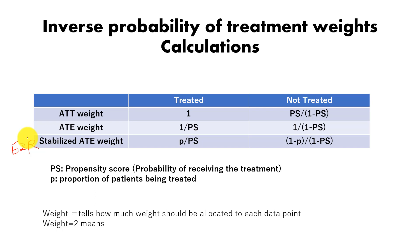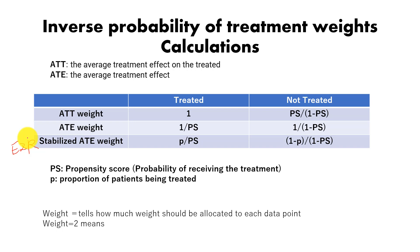ATT and ATE are technical terminology in causal analysis. ATT stands for the average treatment effect on the treated — this means we estimate ATT when we want to assess the average treatment effect for people who are treated. ATE stands for the average treatment effect.